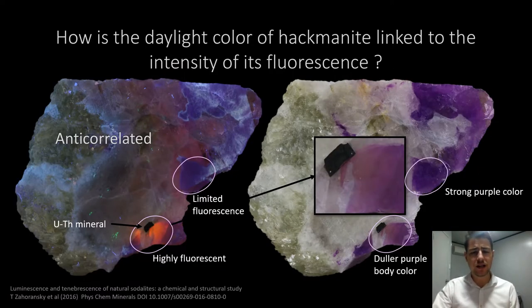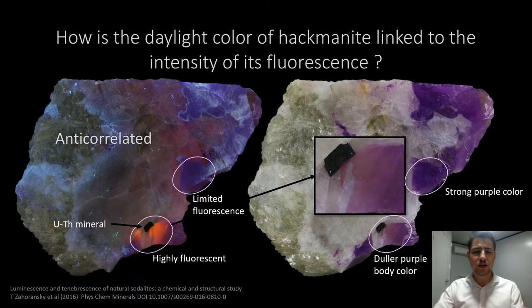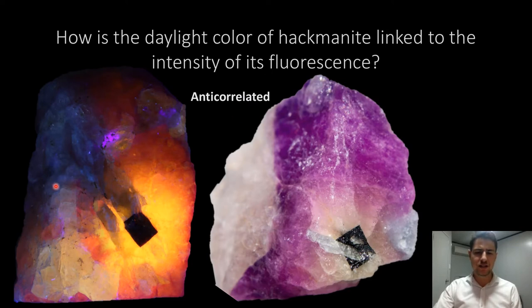How is the daylight color of hackmanite linked to the intensity of fluorescence? You can see here fluorescent, dark color; not so much fluorescent, strong purple color. The purple color lasts until there is enough energy, should it be white light, ambient light or heat, for the electron to escape its trap and recombine with the anion, which causes the depletion of the f-center over time.